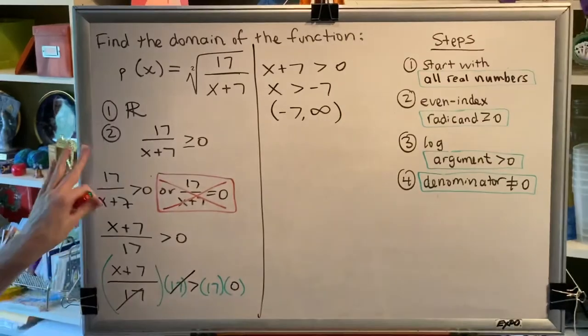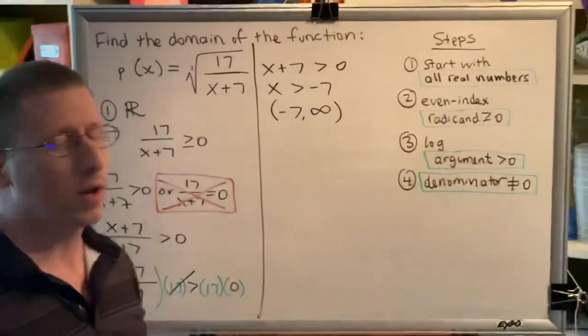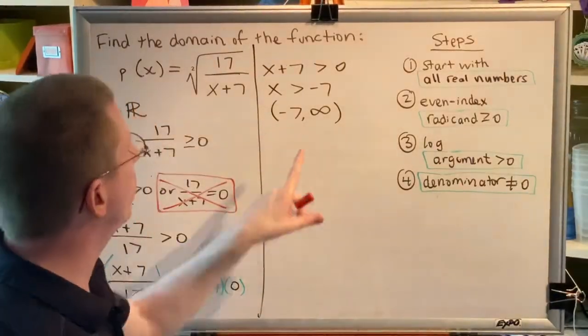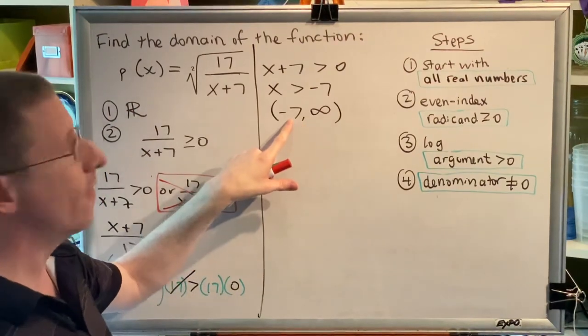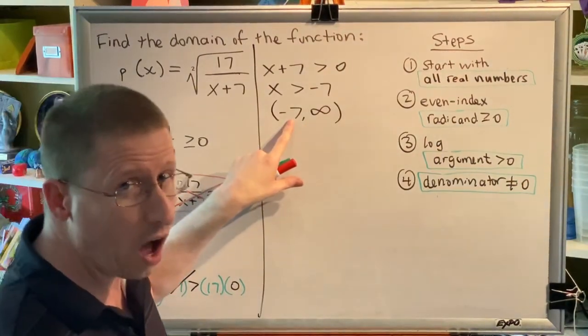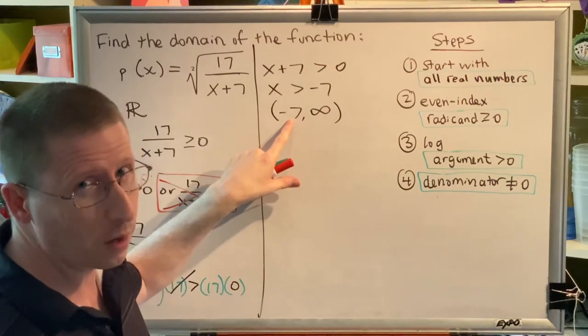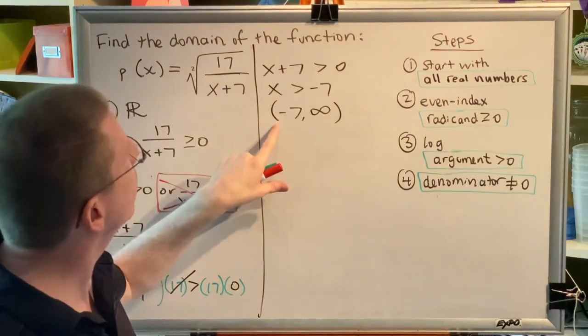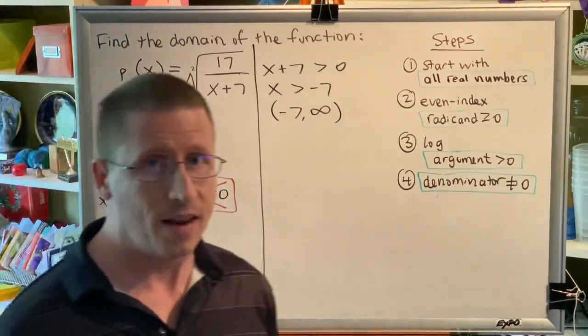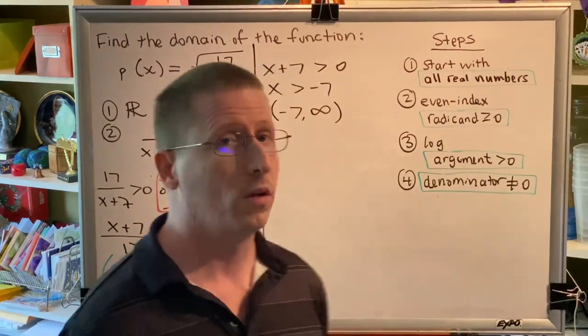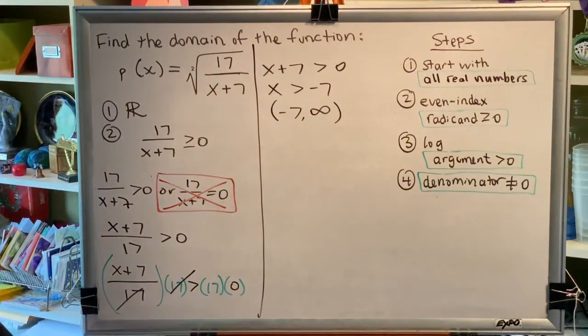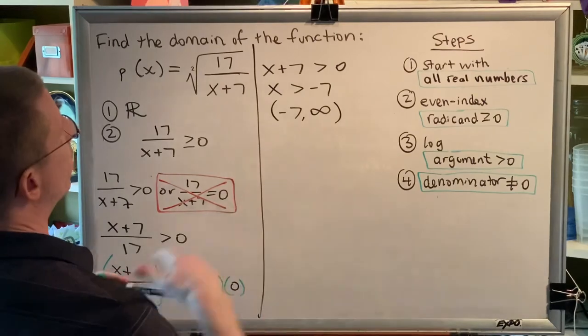Now, we've only completed step 2. We still have to do steps 3 and 4. But before we move on, I want you to notice something. The number negative 7 is not in this collection of numbers, because of the parenthesis here. A parenthesis is an excluding symbol. So at the end of step 2, we have all the numbers that are bigger than negative 7.